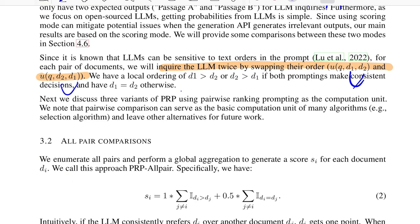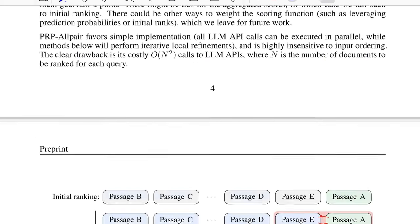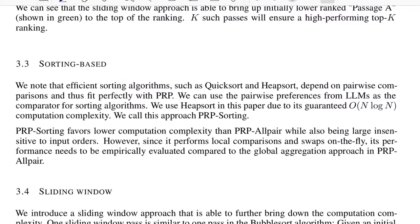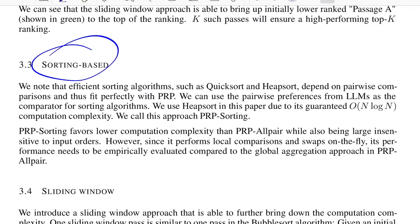They propose three variants of the PRP, and each of them improving the computation - the first one going from n-squared to the final one that they propose, which is order of n.